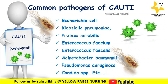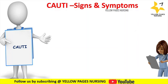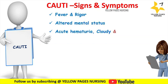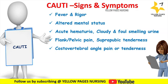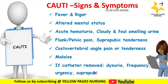Signs and symptoms of catheter-associated urinary tract infection include fever and rigors, altered mental status, acute hematuria, cloudy and foul-smelling urine, flank or pelvic pain, suprapubic tenderness, costovertebral angle pain or tenderness, and malaise. If the catheter is removed, dysuria, frequency, urgency, and suprapubic pain or tenderness may occur.